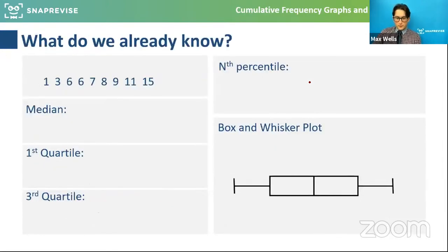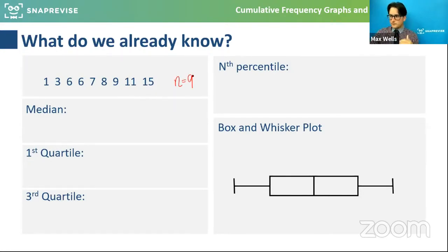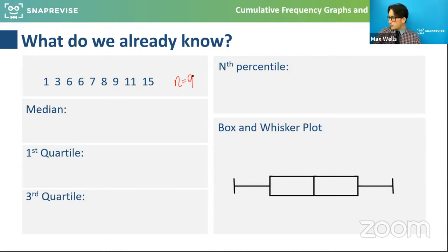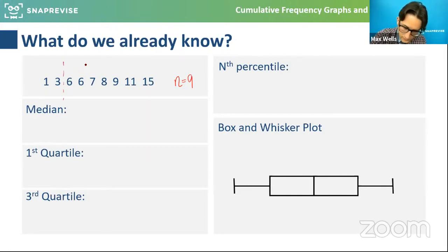Just as a quick recap - if we've got a list of nine discrete values here, so n is nine, and I asked you to find the median or the quartiles. When it's an odd number it's often easier to deal with. The median is if you chop the data in half - it's already in ascending order - what would be the middle value effectively?